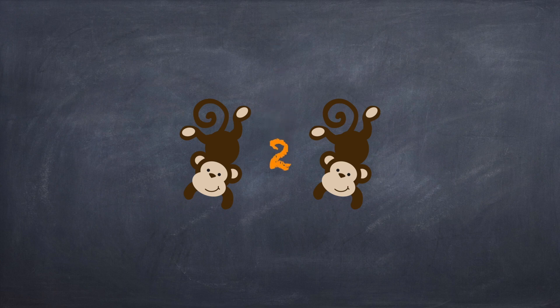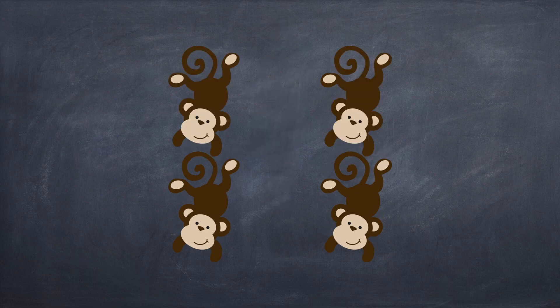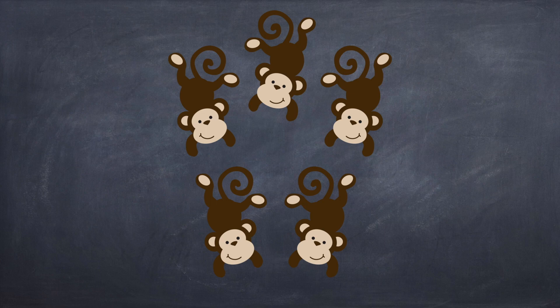Two. There are two monkeys. Let's try another one. How many monkeys are there? Three. There are three monkeys. How many monkeys are there now? There are four monkeys. How about this group of monkeys? How many monkeys do you count? Five monkeys.